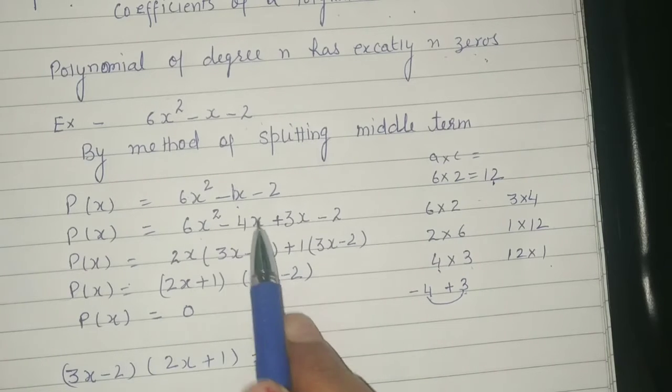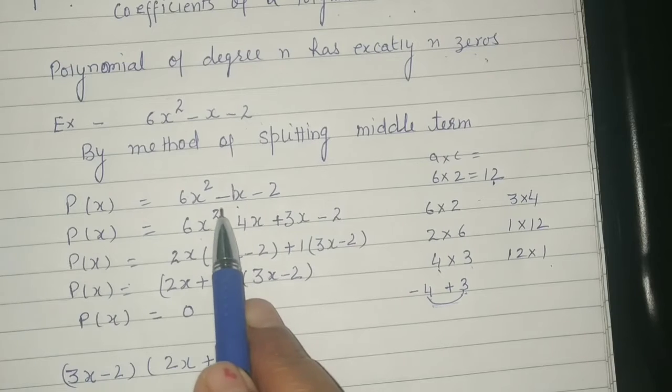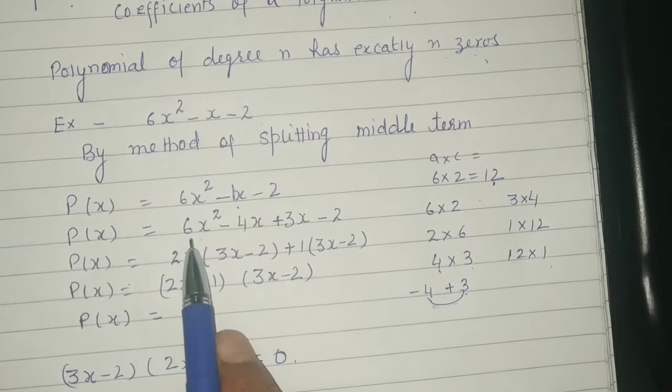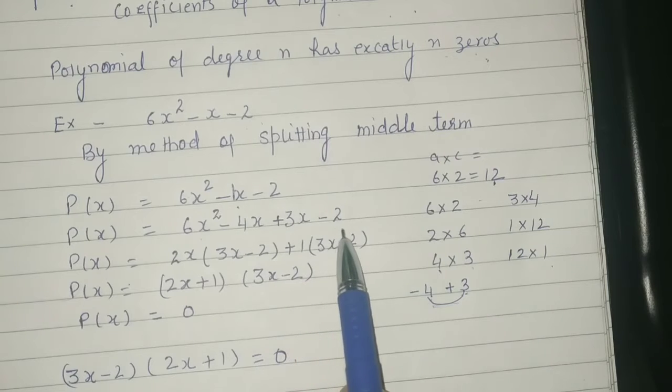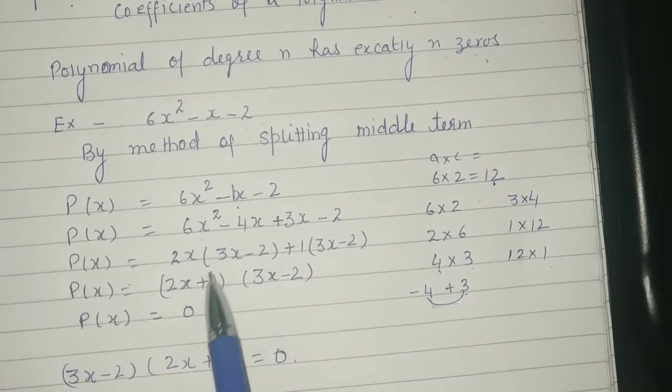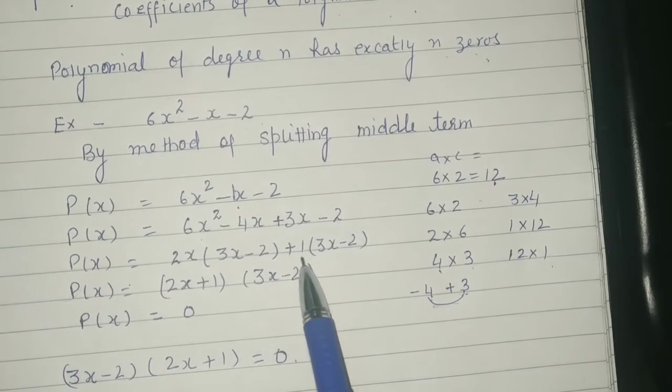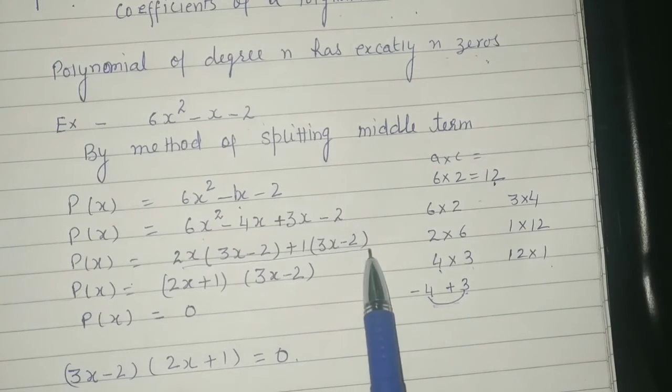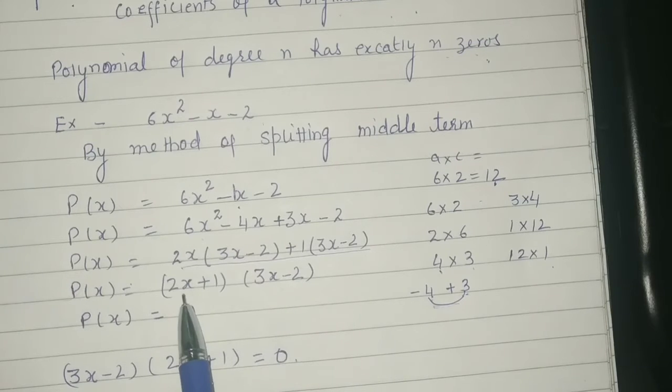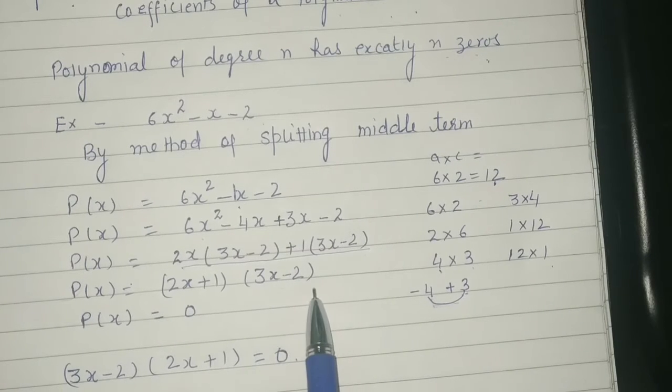So by splitting the term, we get 6x squared minus 4x plus 3x minus 2. So 2x is common, 2x times 3x minus 2. Here we get 3x minus 2 is common. So we get 2x plus 1 times 3x minus 2.